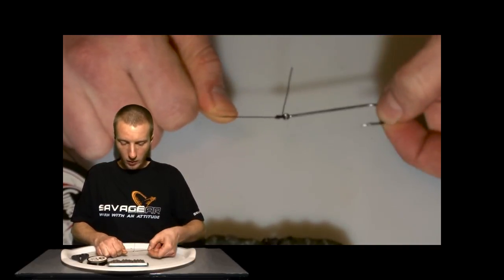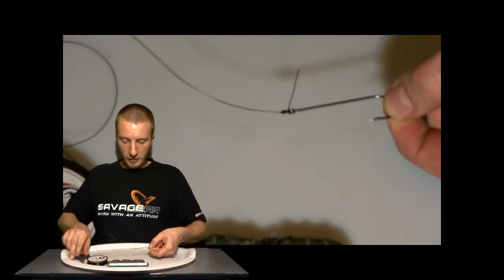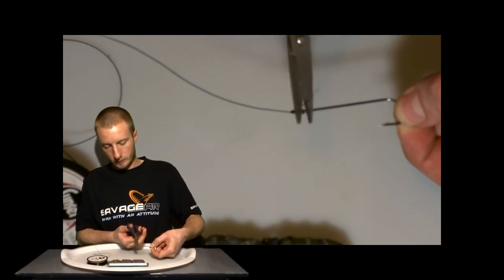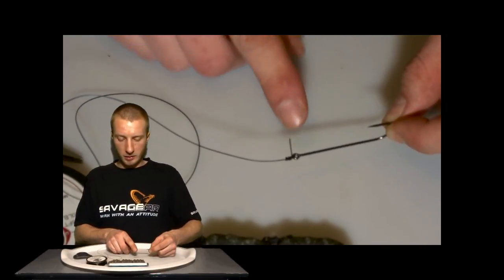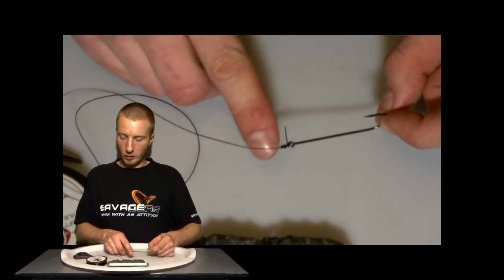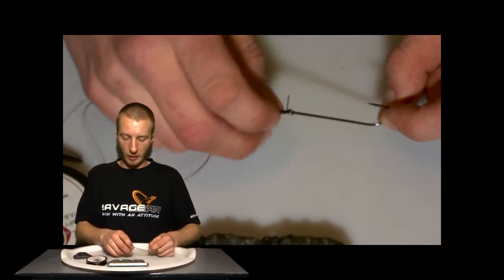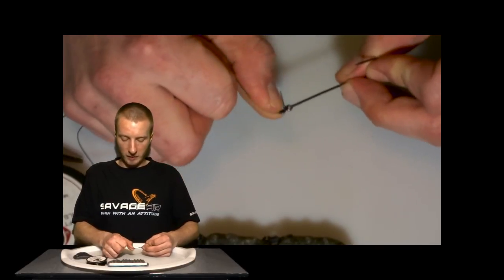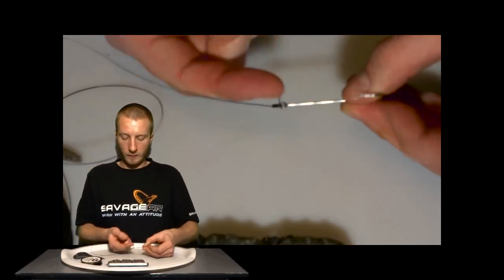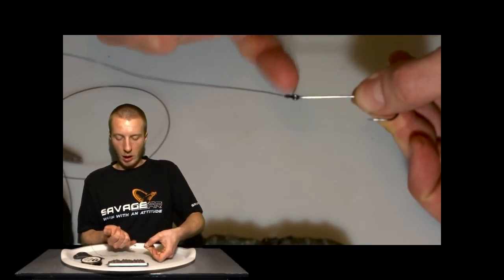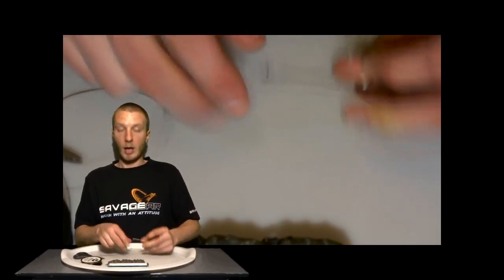There we go. Once it's completely bedded down, trim off the excess. So with this knot, you don't want to trim the excess too short, just because it can have a little bit of a habit of slipping or tightening up anymore. So you always want to give yourself a little bit of a tag just in case.